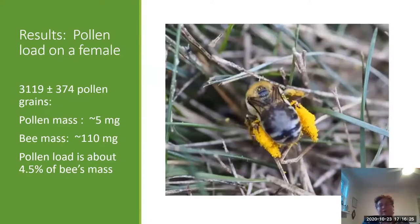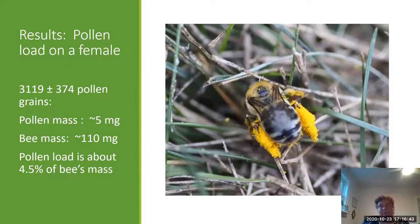The pollen load on a female is about 3,000 pollen grains, and that weighs about 5 milligrams. A female hoary squash bee's mass is 110 milligrams, so her pollen load is about 4.5% of her mass — that's like a 150-pound person carrying one 4-liter bag of milk.